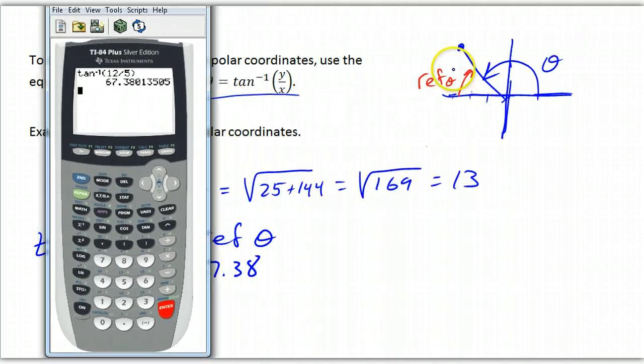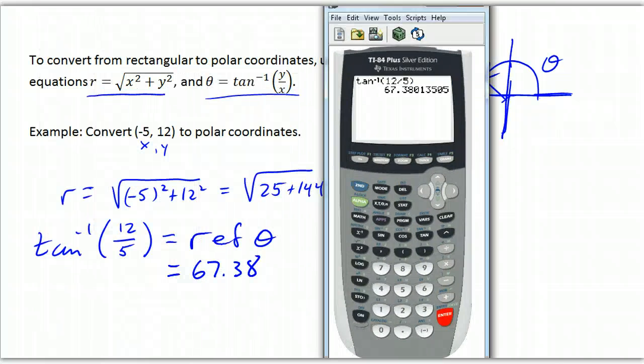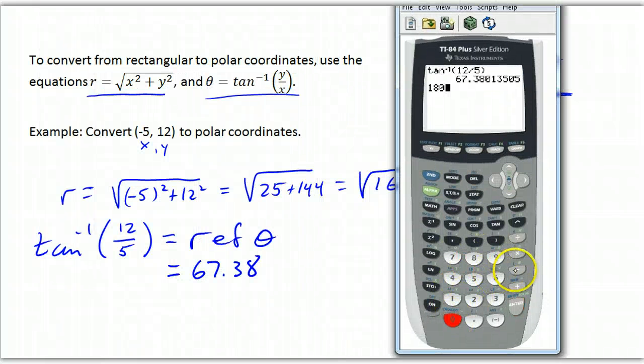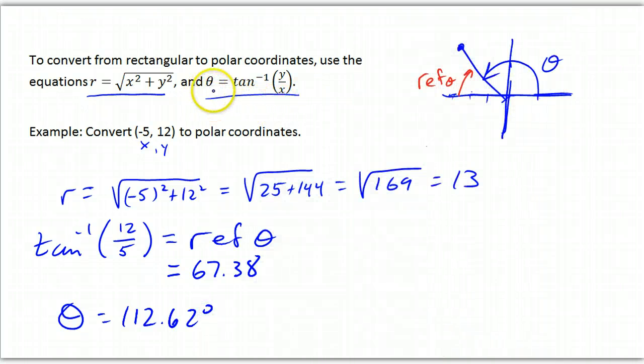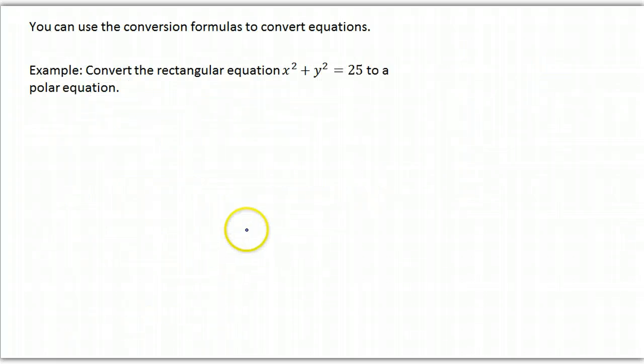So if this angle is 67.38 right here, then the θ we're looking for is 180 minus that, and it's 112.62. So θ is 112.62 degrees. So my advice is when you're finding θ, always be aware of what quadrant you're in before you start, and go for the reference angle first.